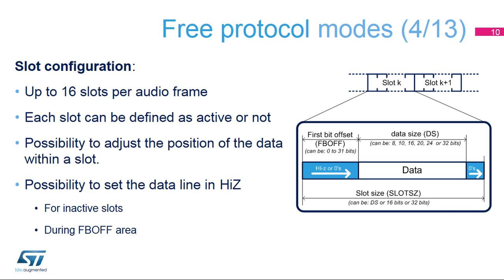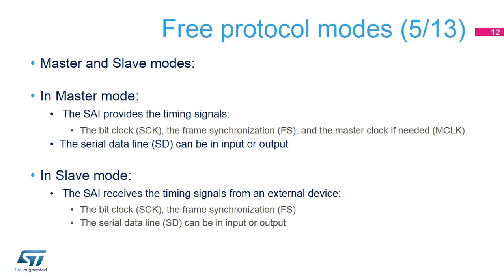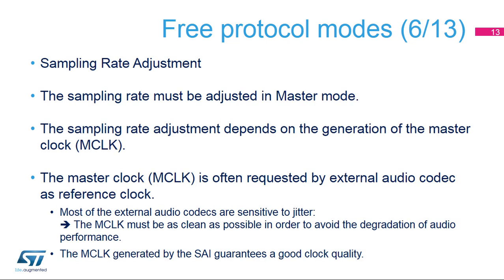In master mode, the SAI can generate the master clock, or MCLK, depending on the audio system configuration. This master clock provides a reference clock to the external audio codecs. In master mode, the SAI generates the frame synchronization signal, or FS, and the bit clock, or SCK. The data line SD can be either input or output. In slave mode, the MCLK signal is not used. The SAI receives the frame synchronization signal and the bit clock from another device, external or internal. The data line SD can be either input or output. In master mode, it is up to the SAI to generate the appropriate timings to provide the correct sampling rate. In slave mode, the sampling rate is provided by the external audio device.